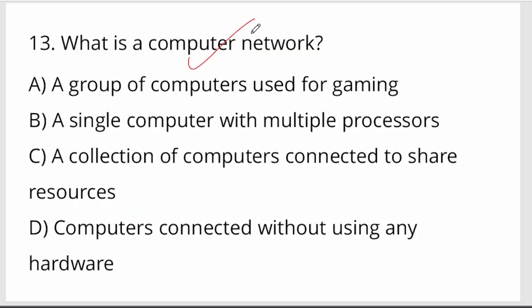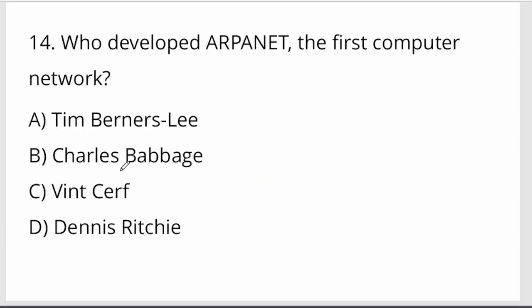What is the purpose of a computer network? A computer network is a collection of computers connected together to share resources. Option C is your right answer.